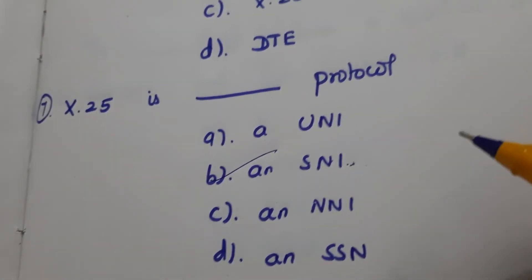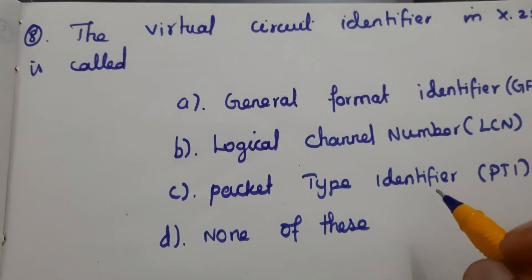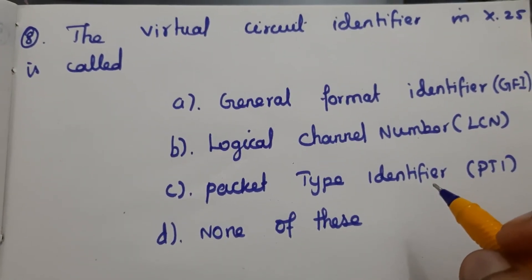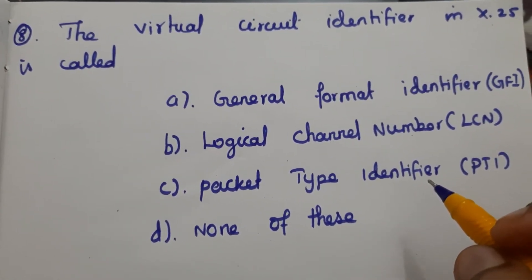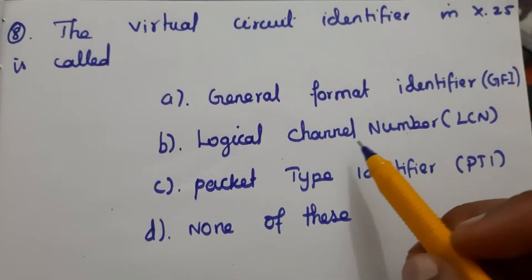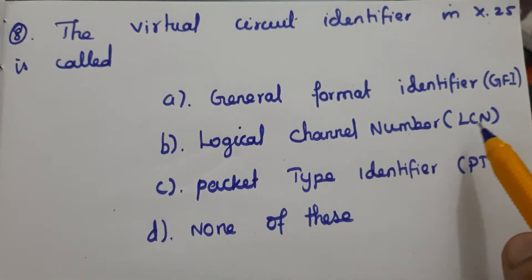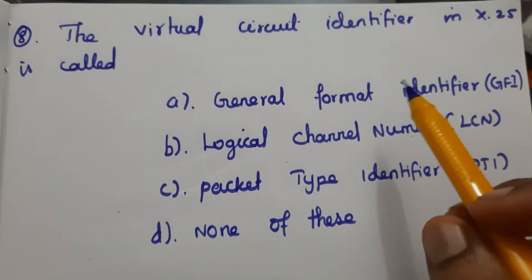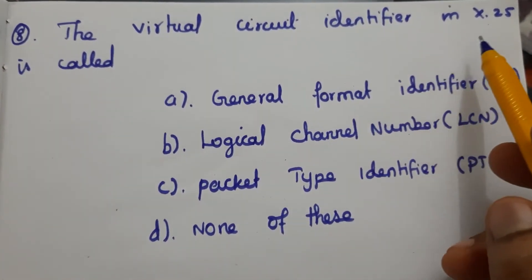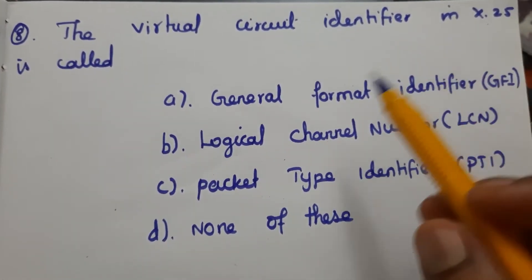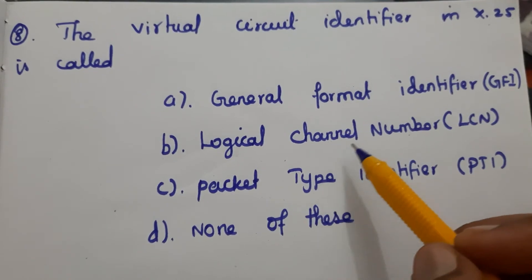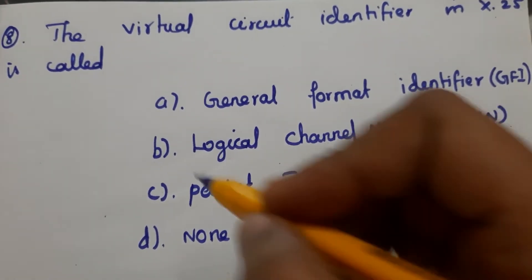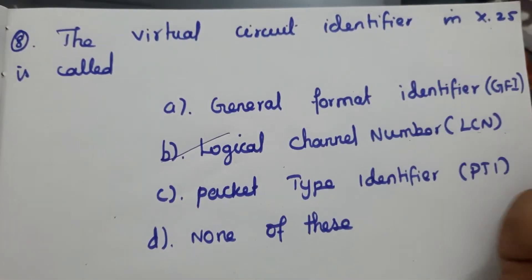Next question: The virtual circuit identifier in X.25 is called the Logical Channel Number (LCN). B is the answer.